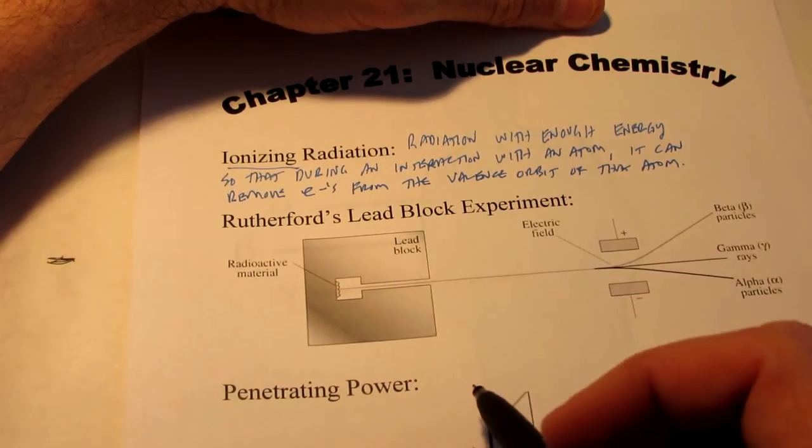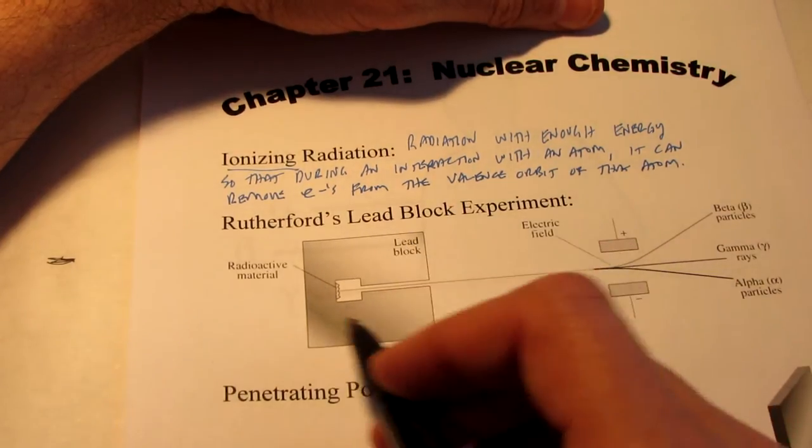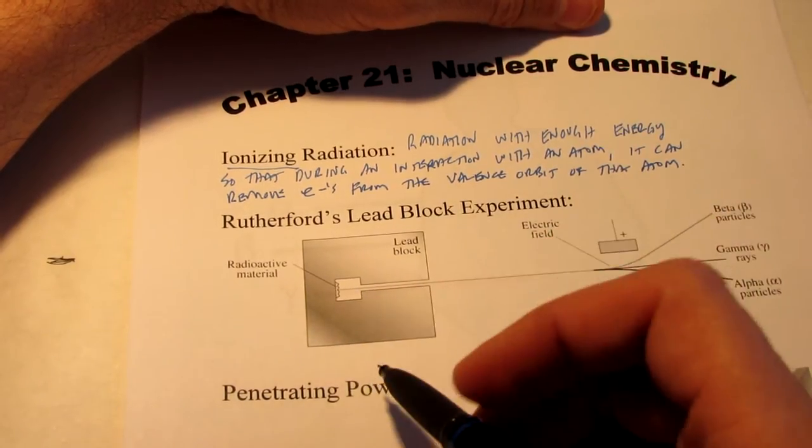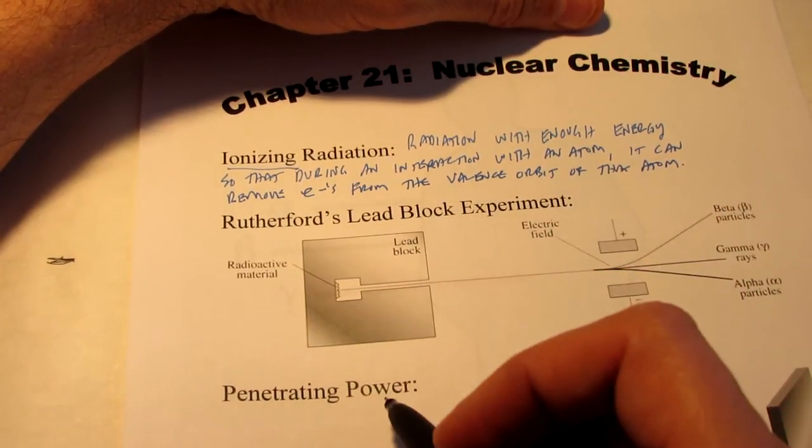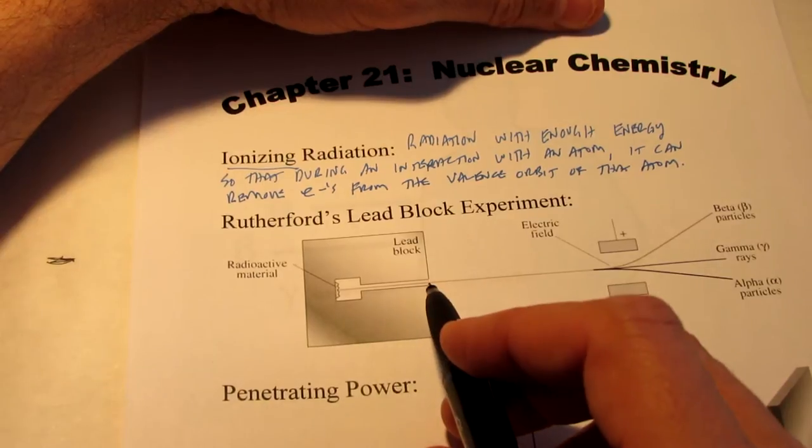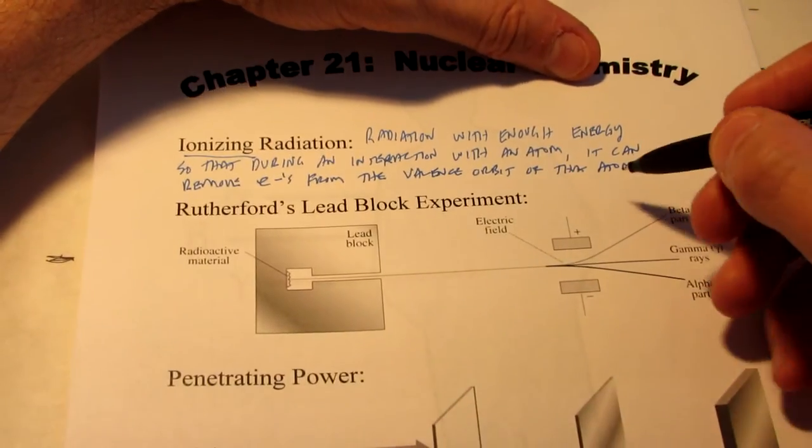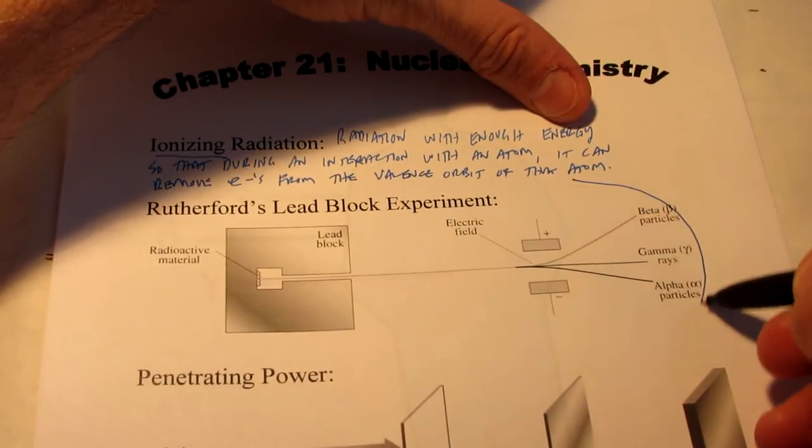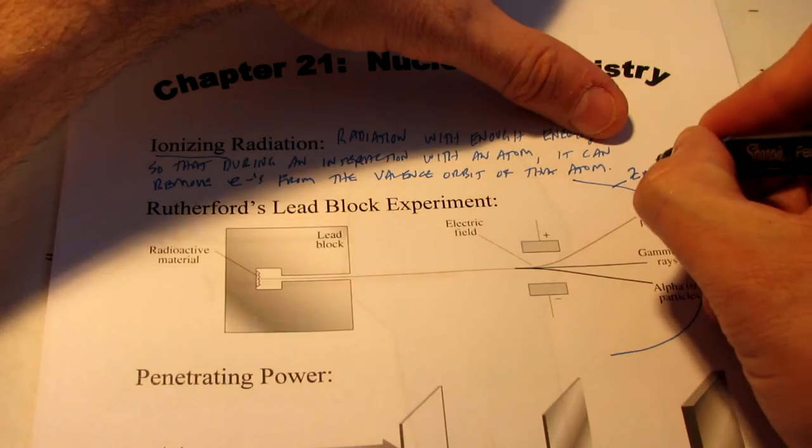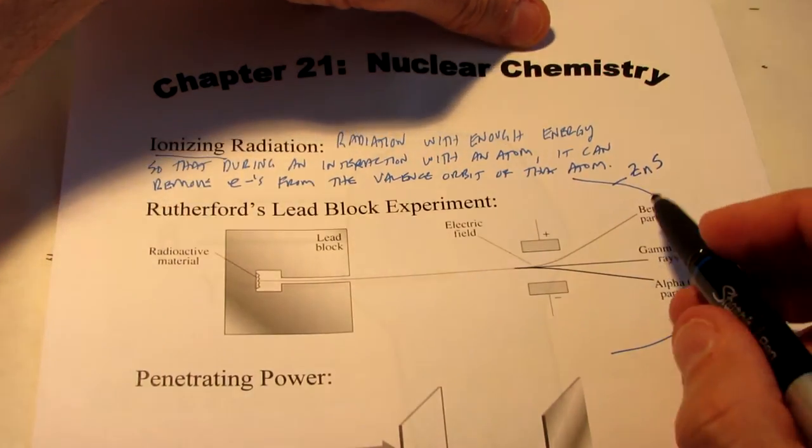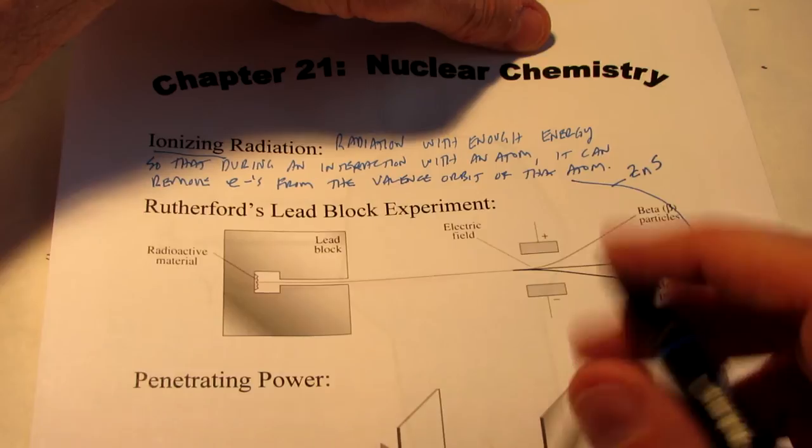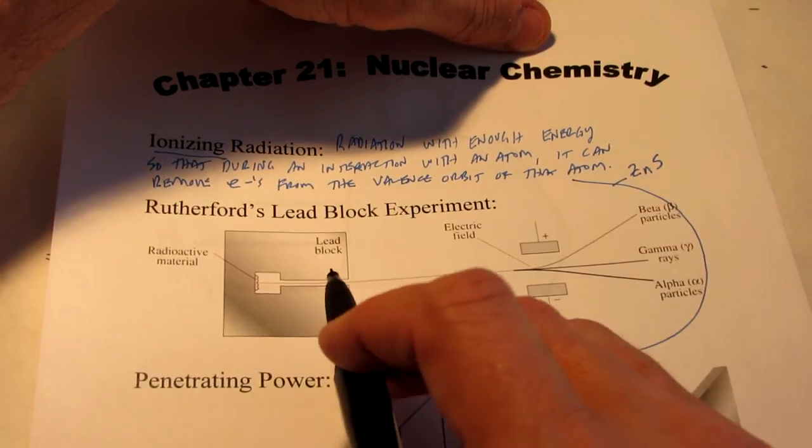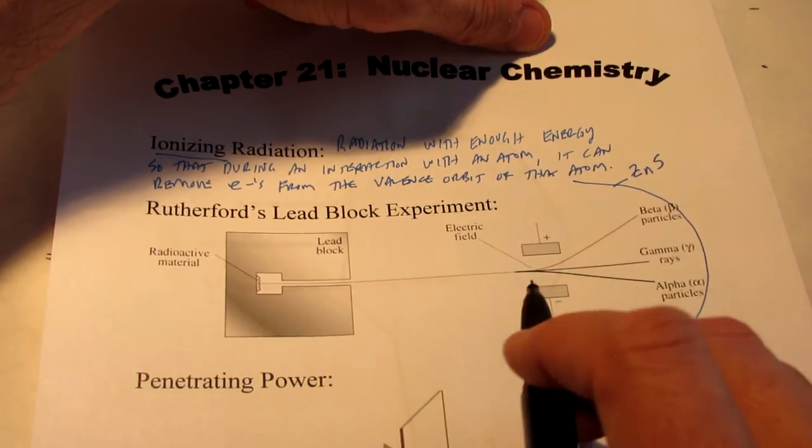Well, he performed this lead block experiment, which is pretty simple. It's a brick, if you can imagine, made out of lead with a hole drilled in it. And a source of ionizing radiation was put in the back of that brick. And the opening was directed towards a magnetic field. Now on the other side of this magnetic field was a screen. Now that screen was made out of zinc sulfide. And it turns out that when zinc sulfide is hit with a particle of ionizing radiation, it fluoresces or glows. So we could actually track these particles as they went through the magnetic field.